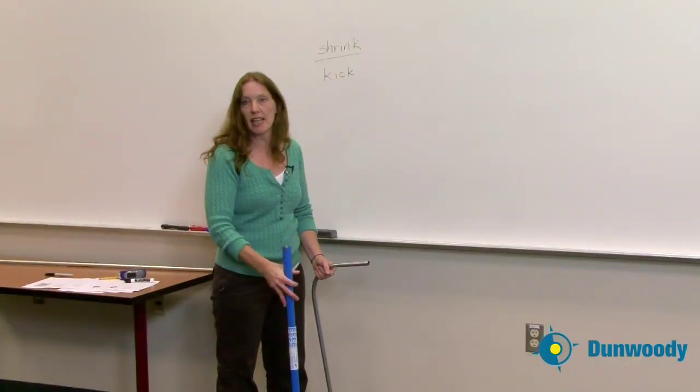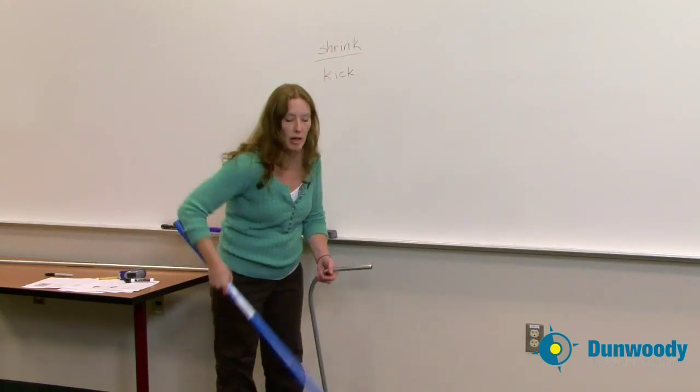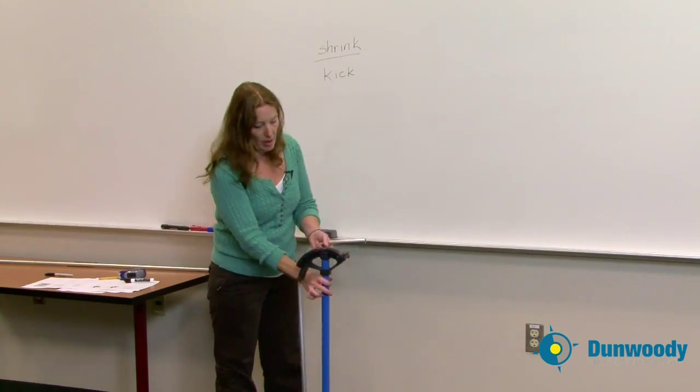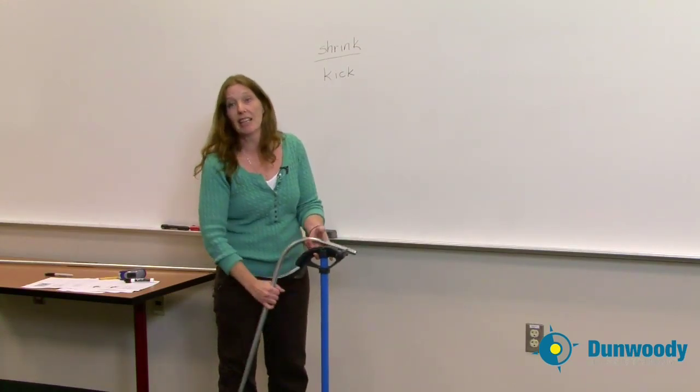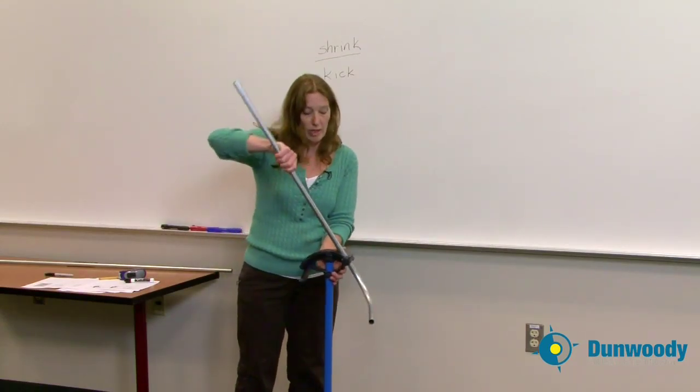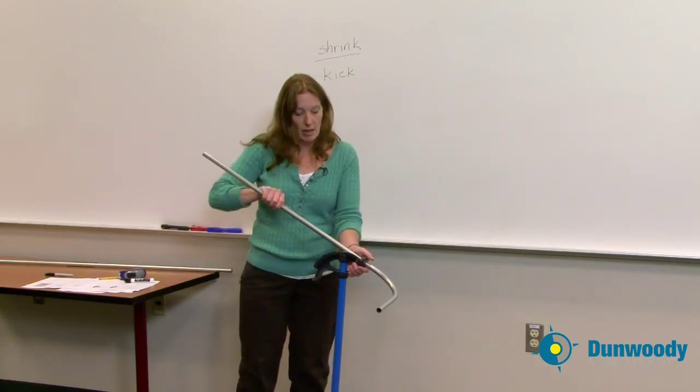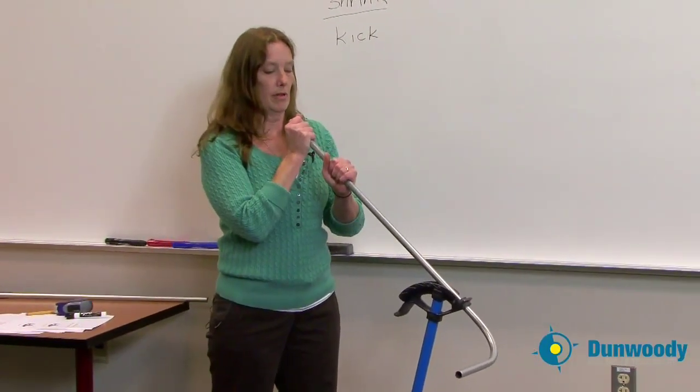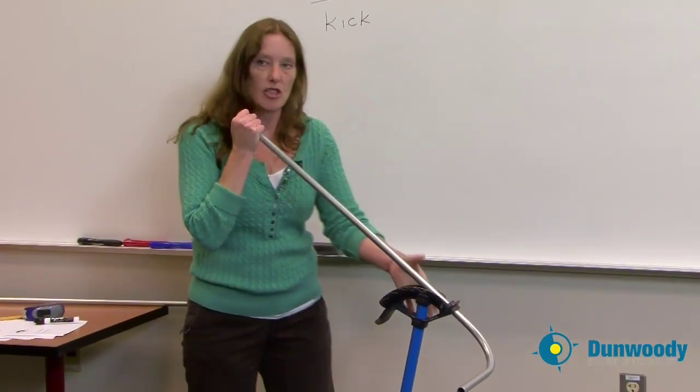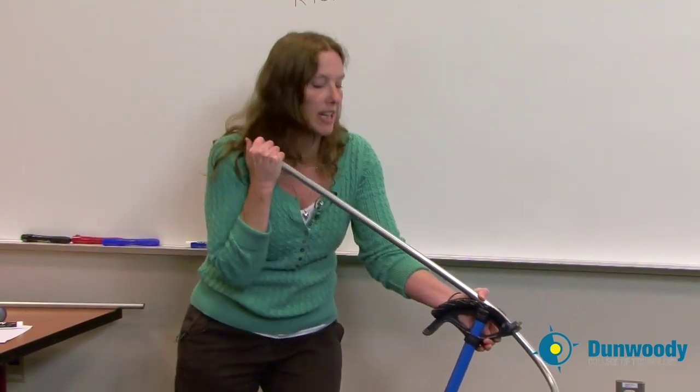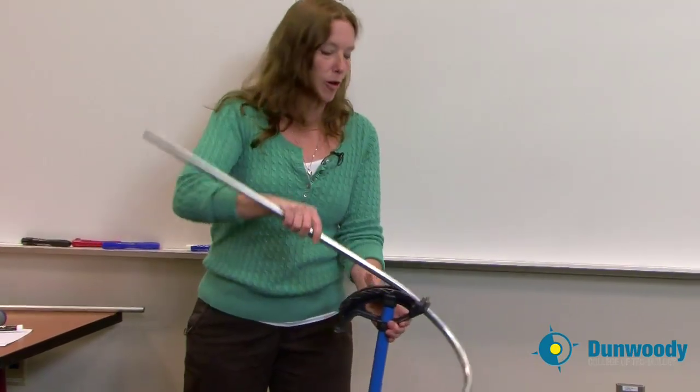Whenever I do less than a 90 degree bend, I want to have more ability to control my bending. So if I want to do a kick, which is anything less than 90 degree bend, I can just put it into my hook, I can make sure everything's level, and then I can just do a slight bend or kick to make it change its level or its direction.